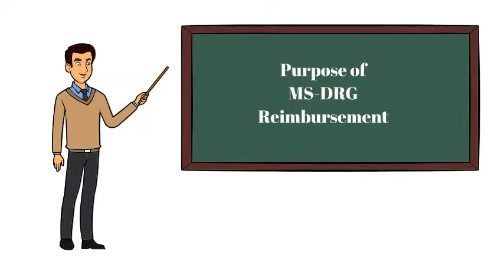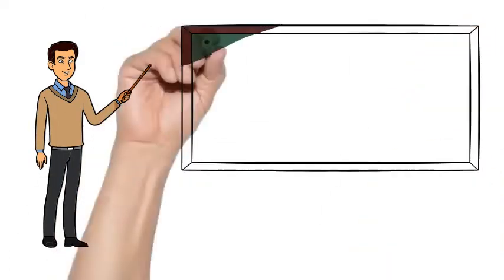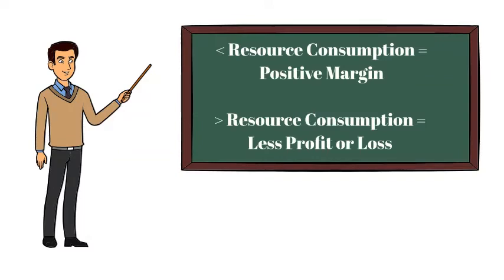The MSDRG payment system forces hospital administrators to work with physicians to control costs, because reimbursement per patient admission is set to a specific, predetermined amount of money based on a patient's diagnosis. Under the MSDRG reimbursement methodology, a hospital makes a positive margin per admission if a patient consumed less resources than the related fixed reimbursement rate, and conversely loses financially if a patient's hospital stay or other related care requirements cost more than the MSDRG rate.